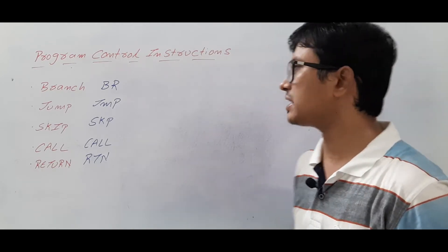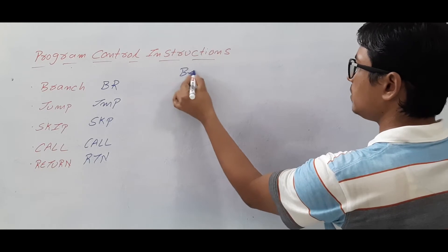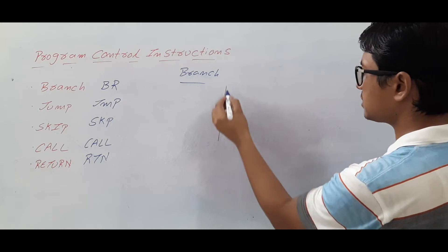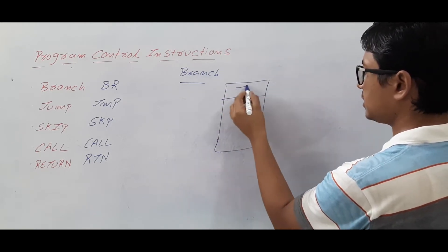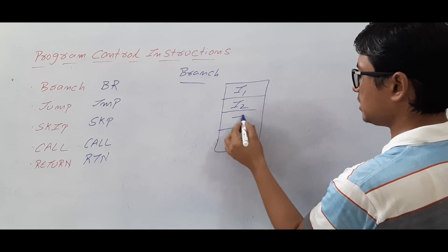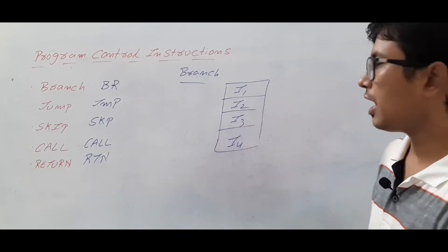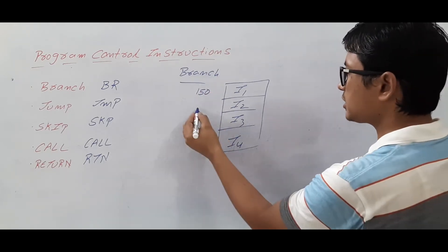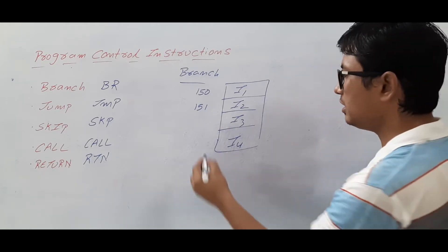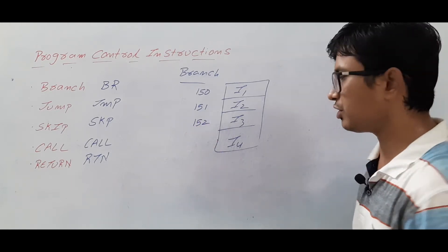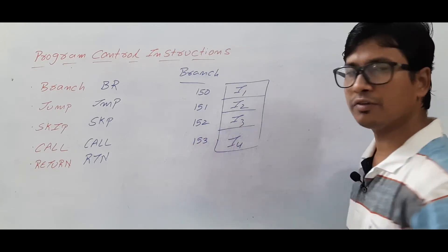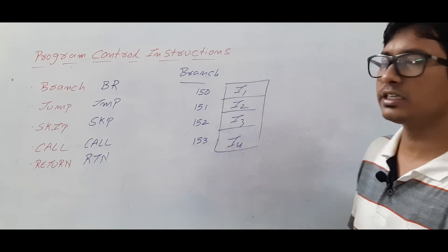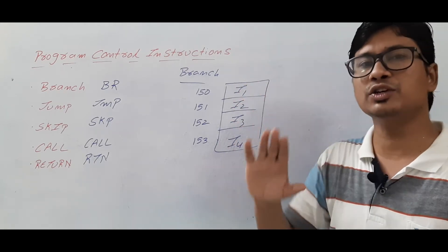Let me discuss about the branch instruction. If you have instructions — instruction 1, instruction 2, instruction 3, instruction 4 — and instruction 1 is starting from address 150, instruction 2 is at location 151, instruction 3 is at location 152, and instruction 4 is at address 153, these instructions 1, 2, 3, 4 are executing in sequence.